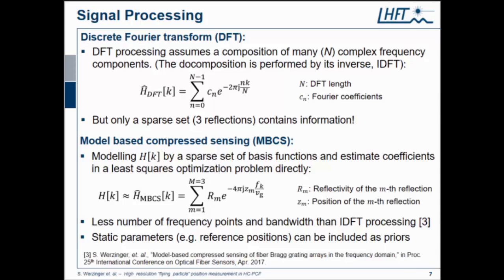It actually looks quite similar to a Fourier decomposition, but we use just the right amount of basis functions. For example, if we have three reflections, this is a sum of three components. What we could do now is we stay in frequency domain and we estimate the coefficients of these components, of the basis functions, directly by using a least squares optimization, for example. The r's are the reflectivities of the reflections, and the z's are the positions. Sometimes you have static reflections like this reference reflection we introduced at the beginning, so you don't have to estimate this. You can measure it and then include it as a prior.